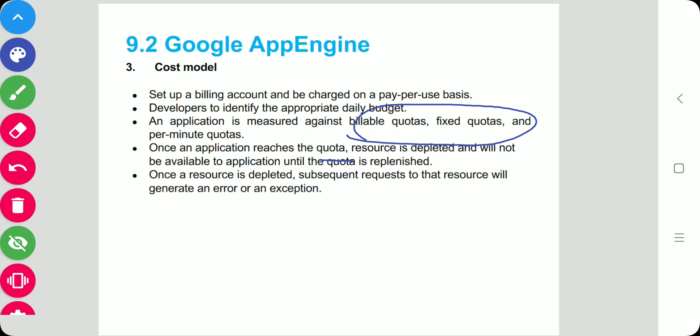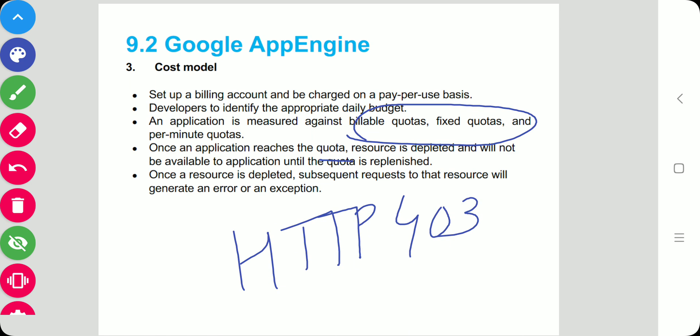Resources such as CPU time and incoming or outgoing bandwidth will return an HTTP 403 error page to the user. Resources and services quotas are organized into free default quotas and billing-enabled default quotas. For these two categories, a daily limit and a maximum rate are defined. A detailed explanation of how quotas work, their limits, and the amount charged to the user can be found on the App Engine website.